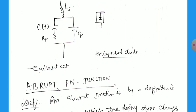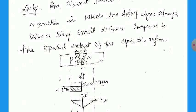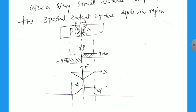Now we switch over to the next topic for today, the abrupt P-N junction. Abrupt means not gradual form. It is abrupt, or we can say at a particular point the density or any values change, then it is abrupt. An abrupt junction is defined as the junction in which the doping type changes over a very small distance compared to the spatial extent of the depletion region.